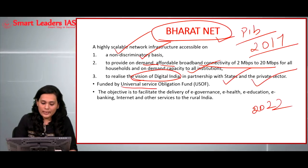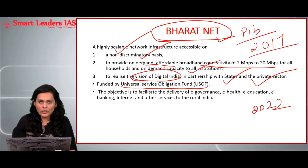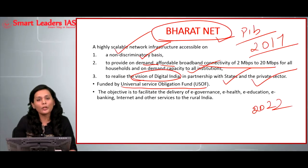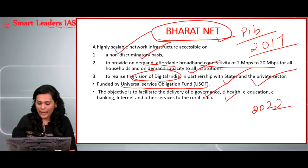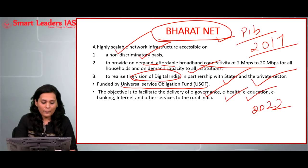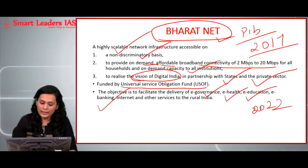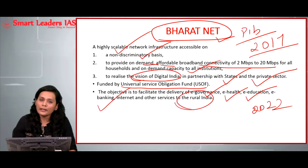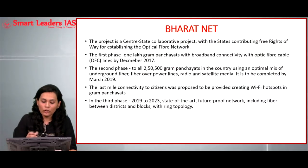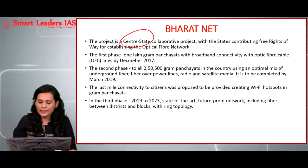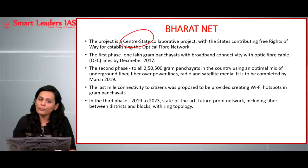The program is funded by the Universal Service Obligation Fund, a fund exclusively created to improve the telecom sector in India. The objective of this fund will help in delivery of e-governance, e-health, education, banking, and other internet facilities to rural India, which will in turn increase the efficiency of service delivery in the Indian economy. This project is a collaboration between the center and the state; the main role of the state is to establish the optical fiber network necessary for initiating the communication channels.